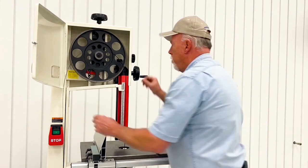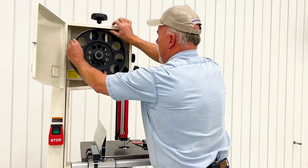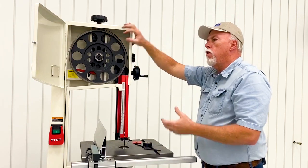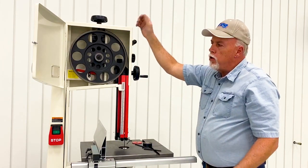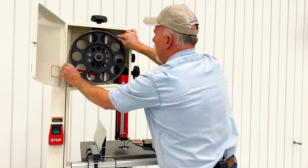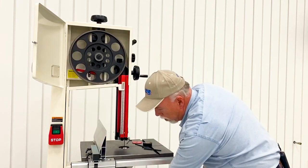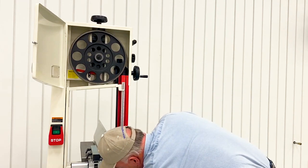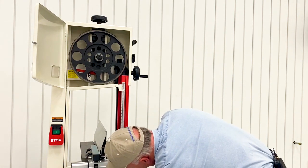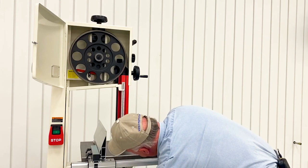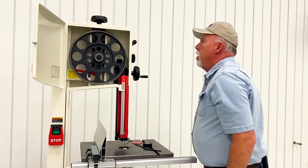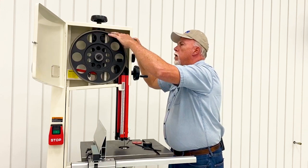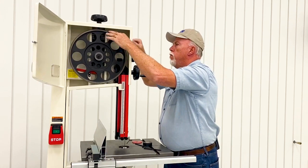Then the next thing you're going to do is release your tension. Some of you have quick tension, older ones have adjustable tension. However you need to do it, release it. And reset your blade as close to center of the wheel as you can possibly get it. Then we're going to reset the tension.